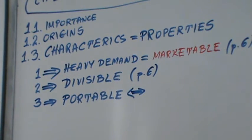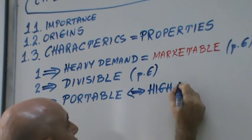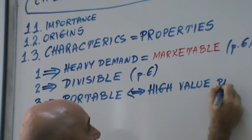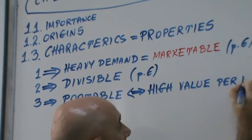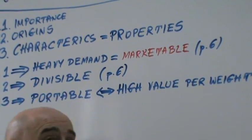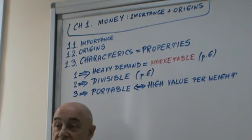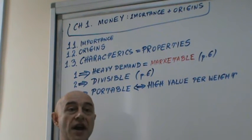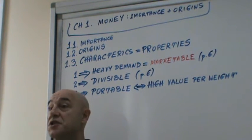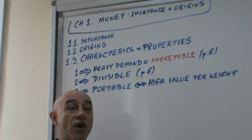Portable has one very simple characteristic: high value per weight, high value per one unit is valuable. Whiskey is relatively valuable, silver is a lot more valuable, of course gold is even more valuable.